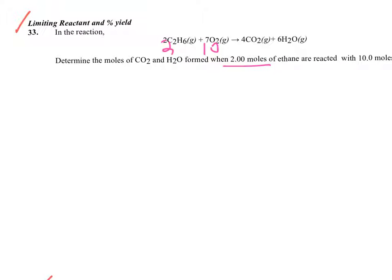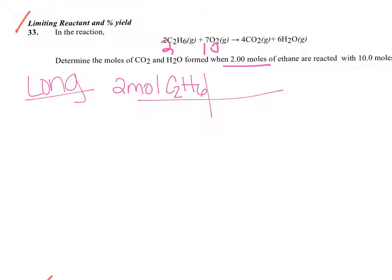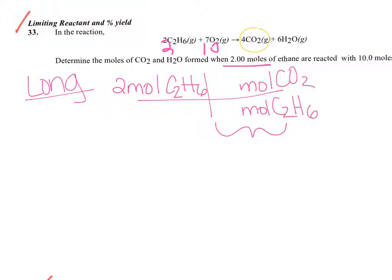You are more than welcome to use the shortcut. So we're going to start with two moles of ethane — that was given to us — and I'm going to relate it to whichever product I want. I usually just pick the first one, carbon dioxide. In the mole bridge, this is where the coefficients go. So we see a two and a four.